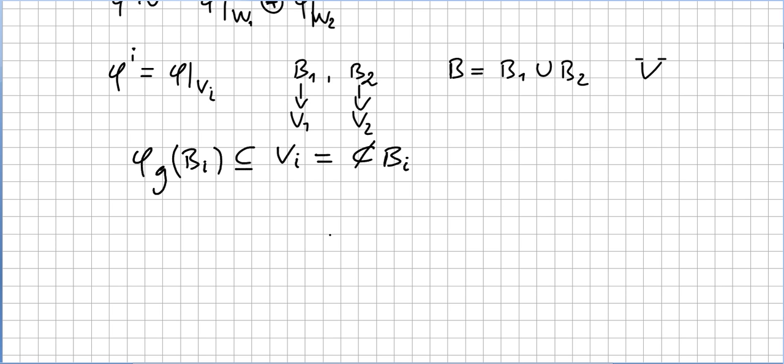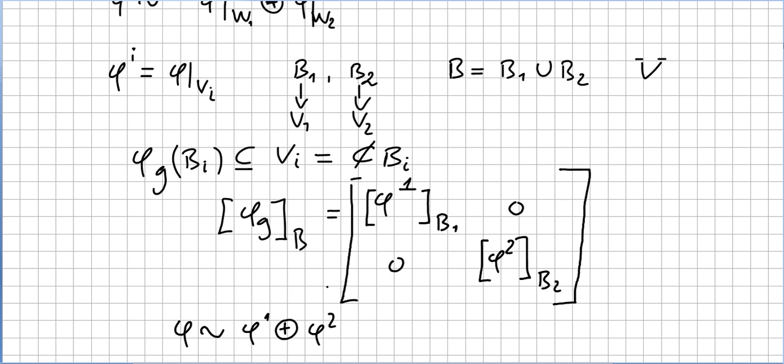In matrix form it's really easy to write this. So we write phi of g in a matrix, but under a given basis. So you just write it - you can check the previous videos for this - as a block matrix.